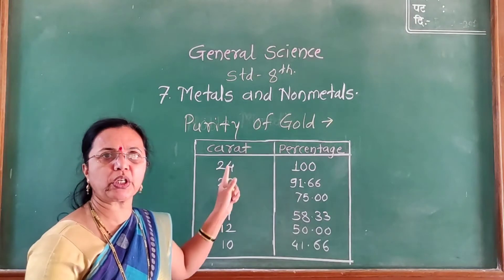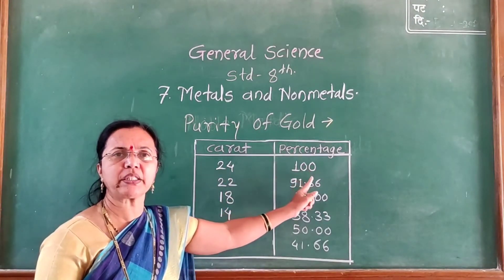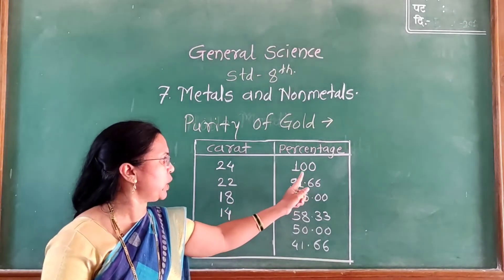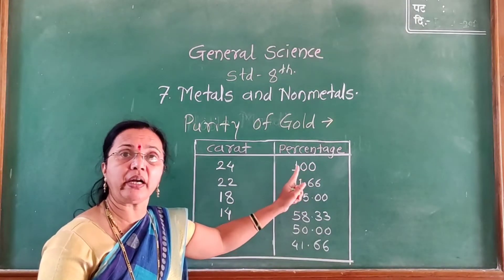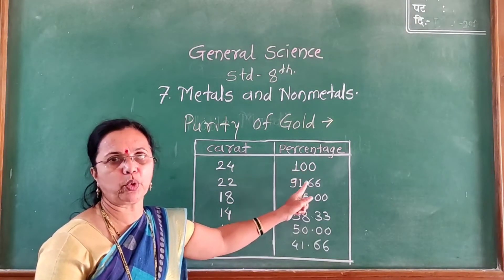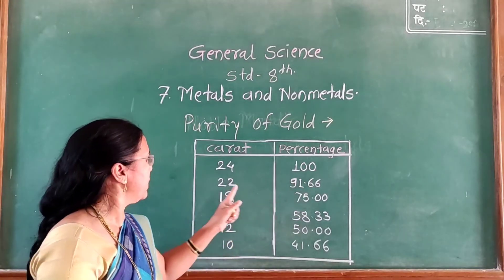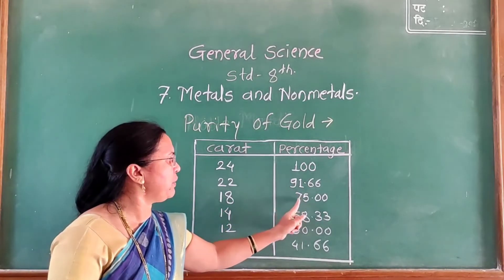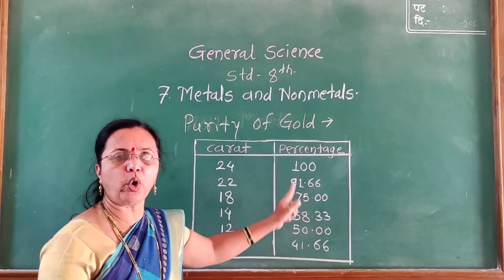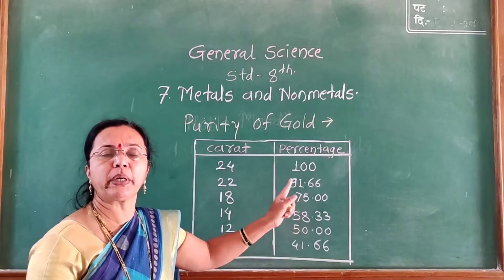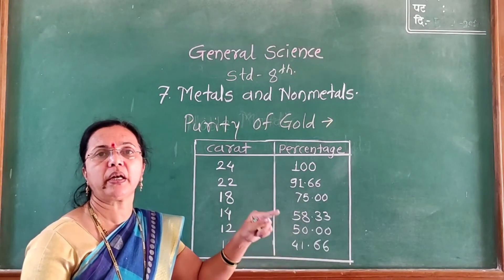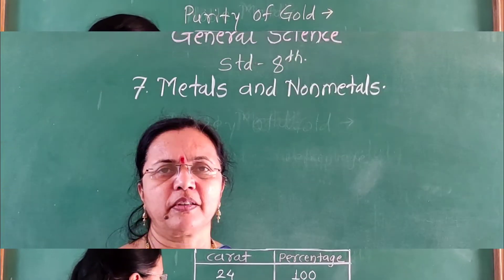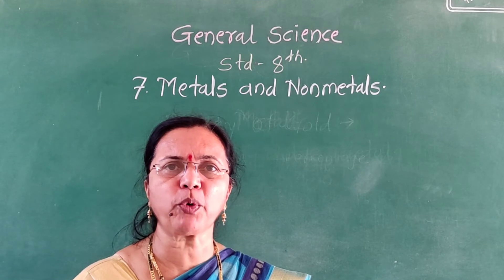So 24 karat gold is 100% pure gold. For example, 18 karat gold contains 75% gold and 25% another metal like copper or silver. This is how we study the purity of gold.